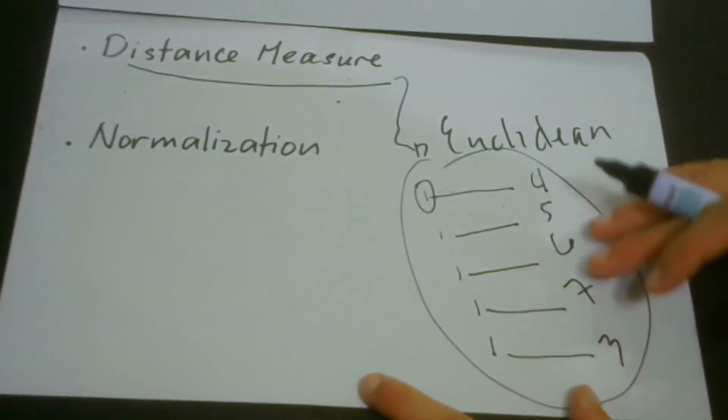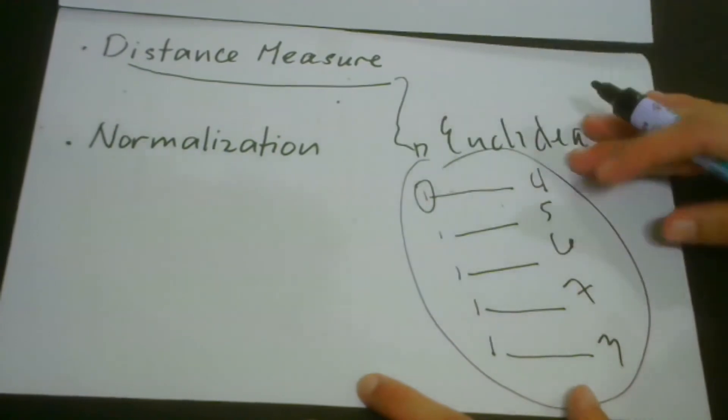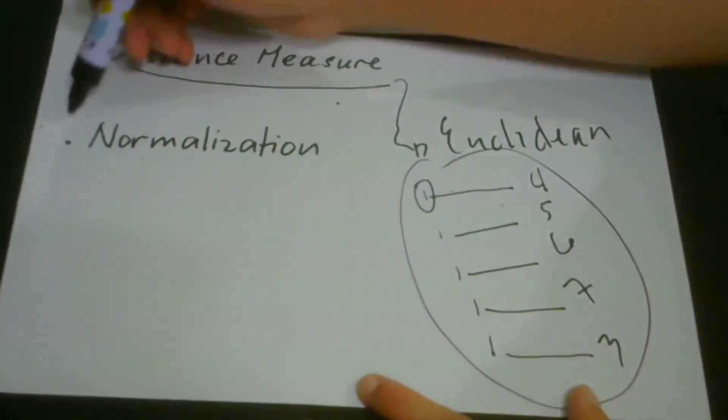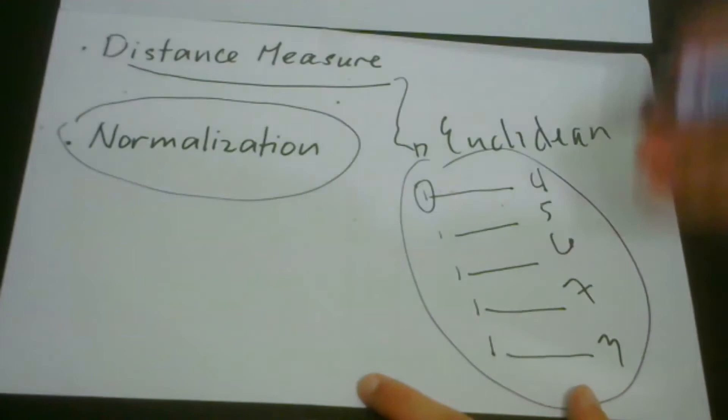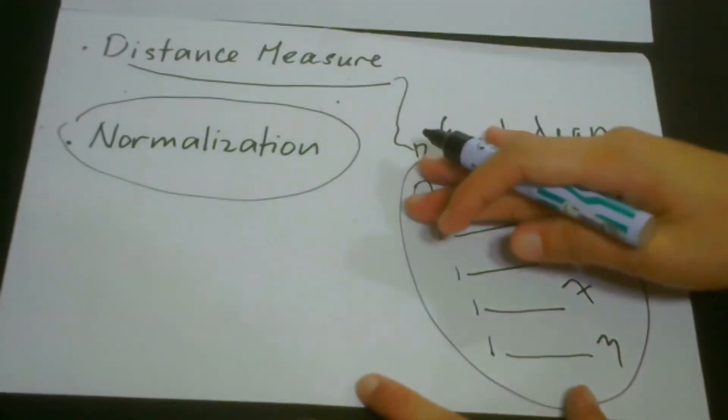That means we have to think about another way to normalize our data points. Here we have the concept of normalization, and I believe you already know what this concept is. This concept is actually very fundamental in data science.